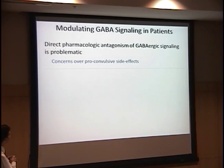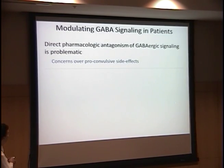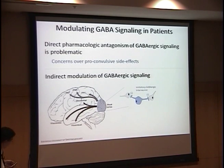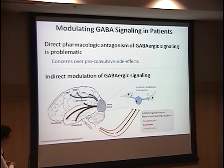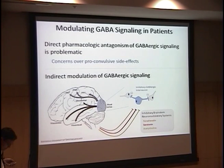There's evidence that if we can modulate this neurotransmitter, we can change plasticity of the visual cortex. However, there are problems with direct targeting of GABAergic signaling — specific concerns over proconvulsive side effects — so there's not a great drug for directly modulating GABA right now. However, indirect modulation of GABA signaling may be possible. These inhibitory interneurons in the visual cortex that use GABAergic signaling are known to be modulated by brainstem pathways that use other neurotransmitters, including noradrenaline, serotonin, and acetylcholine. We have medications — the SSRIs — that already target serotonin.